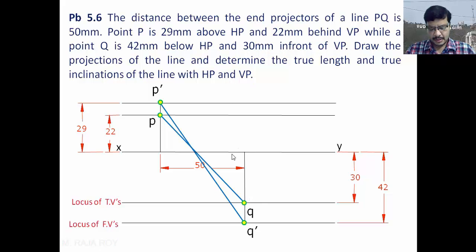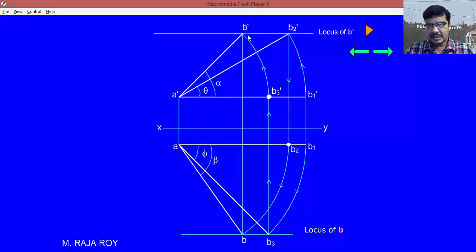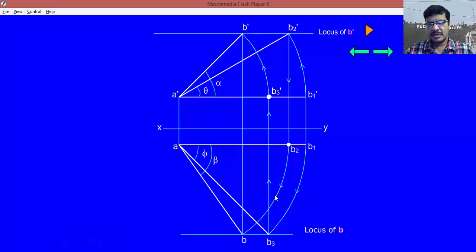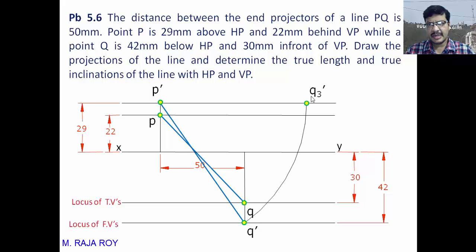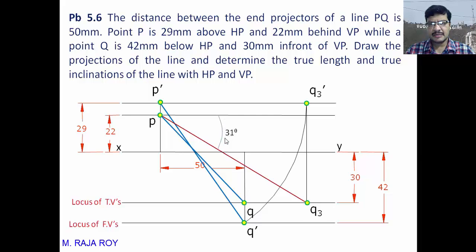To find the true length, observe the standard block method. When A dash B dash and AB are known, from B dash you draw an arc in the reverse direction onto the locus of A dash to get D3 dash. Applying this here: take P dash as center and P dash Q dash as radius, draw an arc onto the locus of P dash to get Q3 dash. From Q3 dash, draw a projector onto the locus of the top views to get Q3. The line PQ3 gives the true length, and its inclination with XY is the inclination with respect to VP, denoted phi.